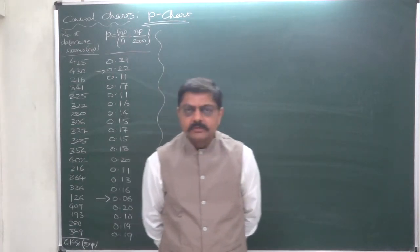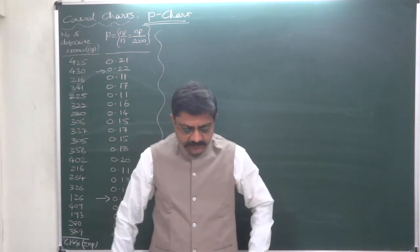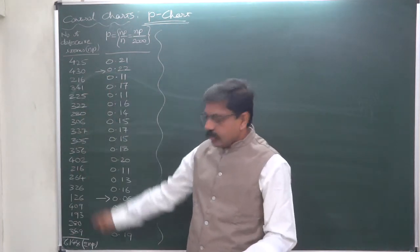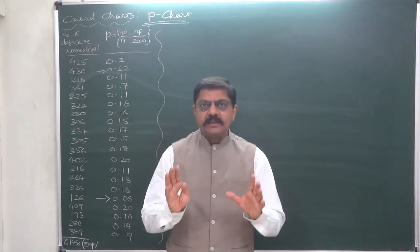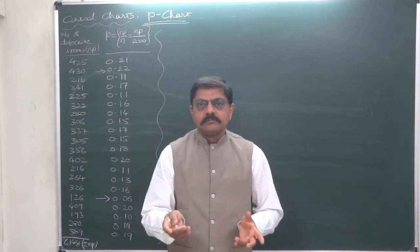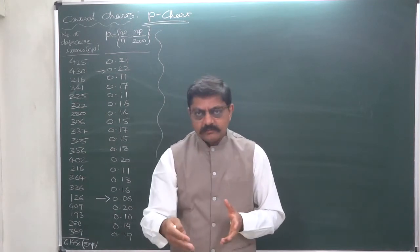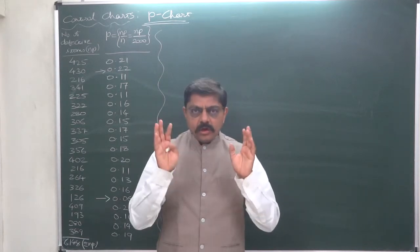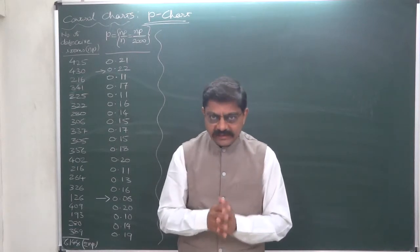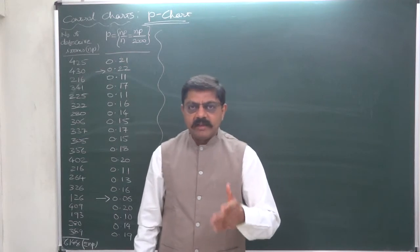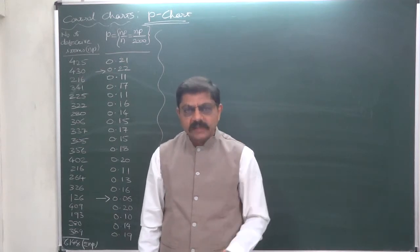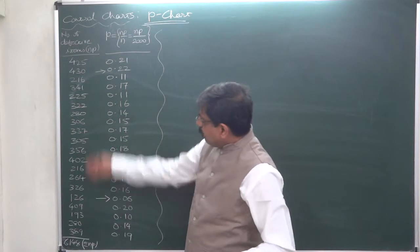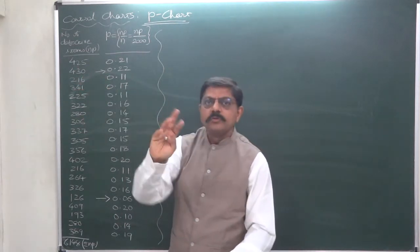So 20 samples containing 2000 items and the number of defective units in each sample are 425, 430, 216 and so on. You can read the whole question in the section below your video screen. Please push the show more button. Don't forget there is the whole question and all other important notes. Many students raise the question. The question is always there, just you need to press the button show more.